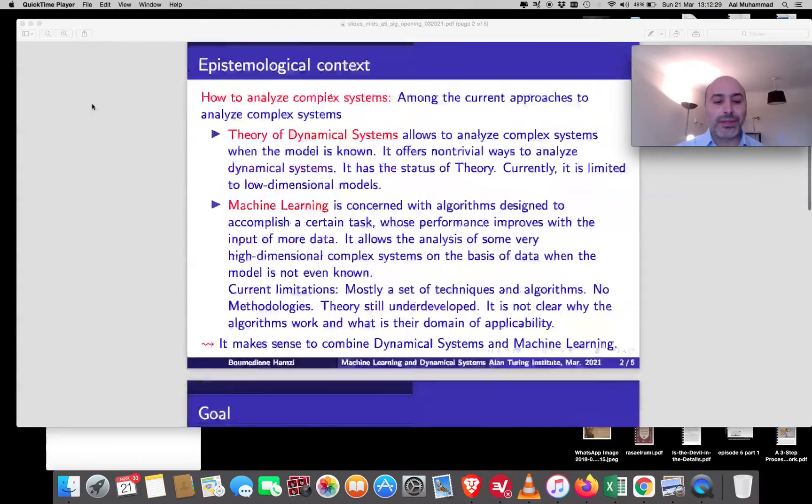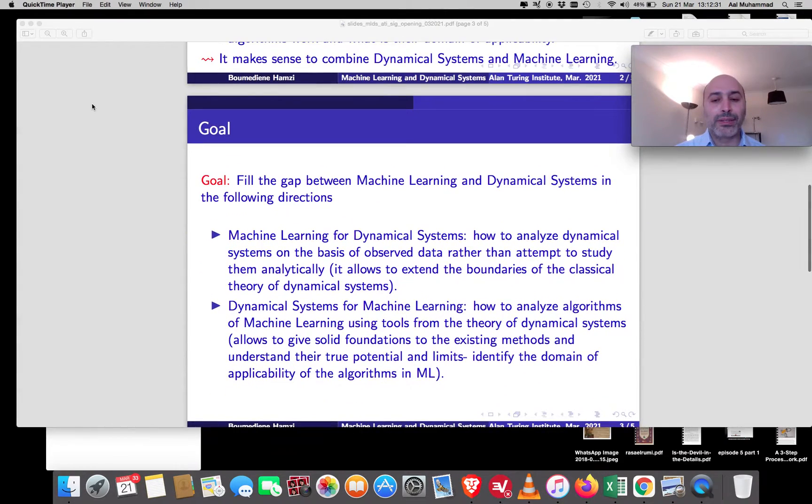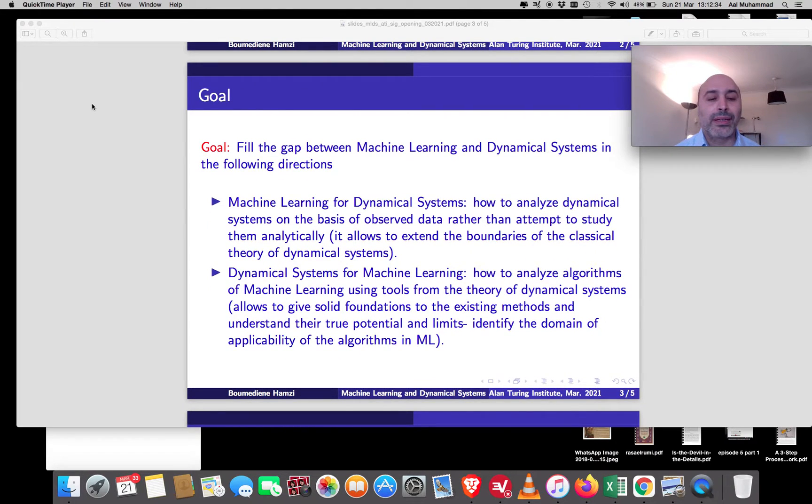So here in this special interest group we are interested in filling the gap between these two fields in the following directions. The first one is machine learning for dynamical systems where the goal is to analyze dynamical systems on the basis of observed data rather than attempt to study them analytically. This would allow to extend the boundaries of the classical theory of dynamical systems and go to high dimensions for example.